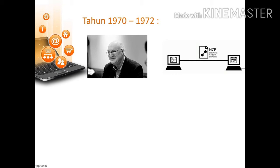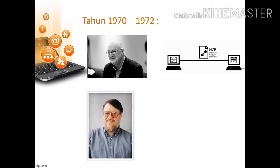Pada tahun 1971, terjadilah suatu sejarah perkembangan internet di dunia, karena pada tahun 1971 ini terbentuklah yang namanya email, atau surat-menyurat secara elektronik. Orang pertama yang mengirimkan email adalah seorang programmer komputer yang bernama Ray Tomlinson. Ia mengirimkan email untuk pertama kalinya. Itu terjadi pada tahun 1970 sampai dengan 1972.